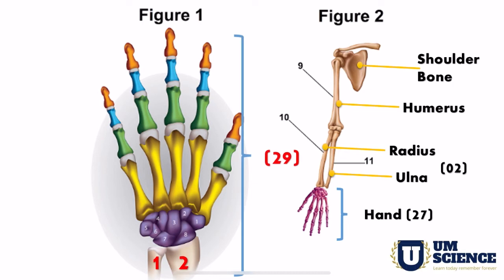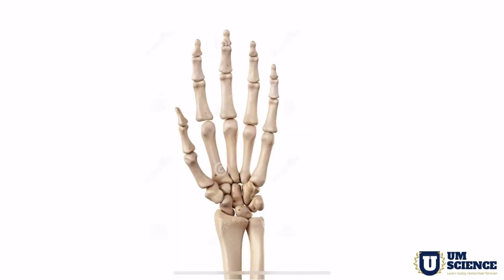Our hand, which we have just discussed, consists of 27 bones, and these two bones — radius and ulna — together make 29 bones total. So if the question is about only up to the wrist area, the answer is 27. But with the full hand including radius and ulna, we cannot move our hand properly without those bones, so the total is 29 bones where radius and ulna are included.